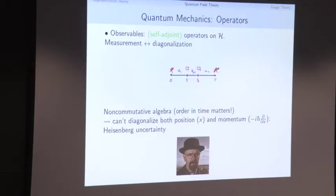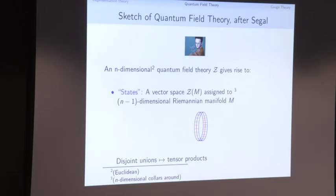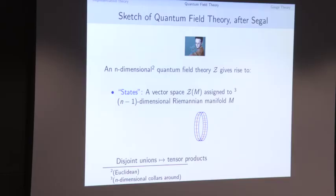A rough sketch of quantum field theory, starting with the Schrödinger picture — what states are. In quantum field theory in n dimensions, for every (n−1)-dimensional Riemannian manifold M, we attach a vector space Z(M), the space of states on M. Before there was only one (n−1)-manifold: a point. Now in higher dimensions we have many Riemannian (n−1)-manifolds. One rule is that a disjoint union of manifolds goes to the tensor product of the state spaces.